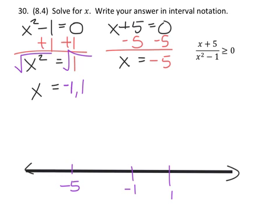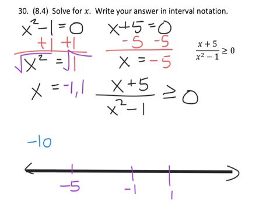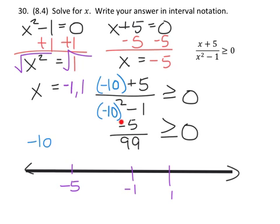So let's go ahead and start testing some points. Let's start first with any value to the left of negative 5 on the number line, something like negative 10. And then we go back to the original equation, and we're just going to replace the x's with this negative 10. And in the numerator, we have a negative 10 plus 5, which is a negative 5. And then in the denominator, negative 10 squared is 100 minus 1, that's going to be 99. So is this value greater than or equal to 0? Well, since this is a negative 5, this makes the whole fraction a negative. Even though it's very small, it's very close to 0, it still does not work.